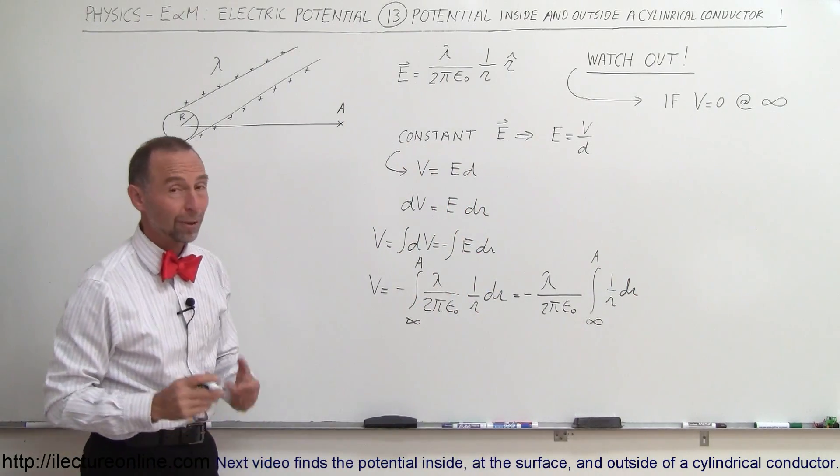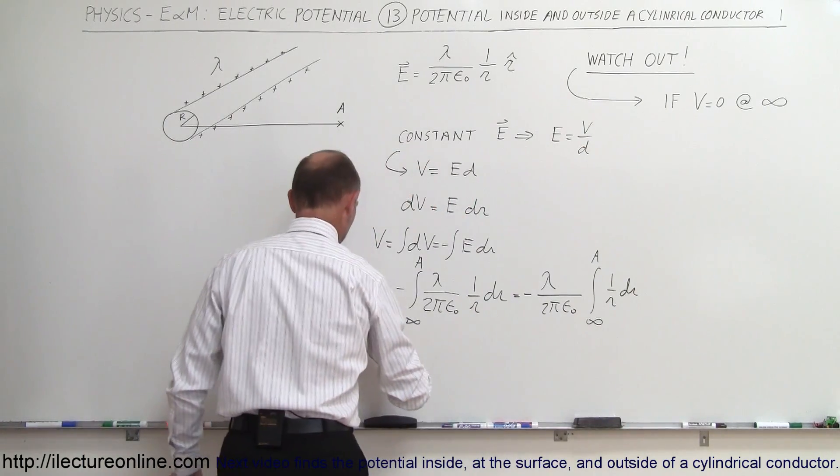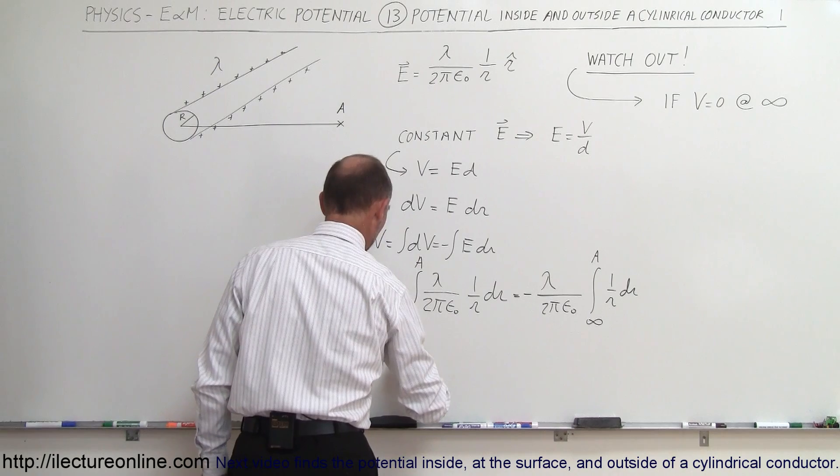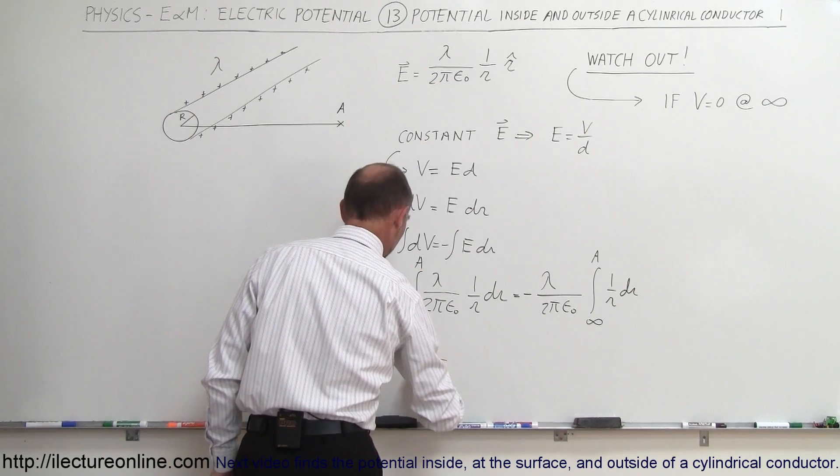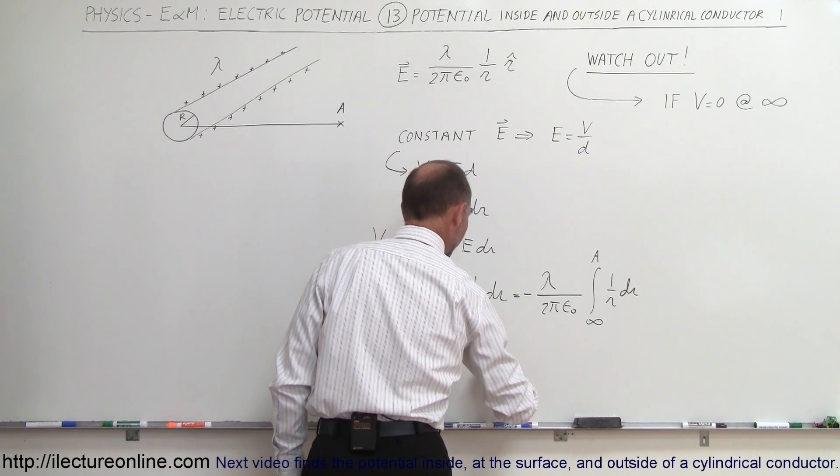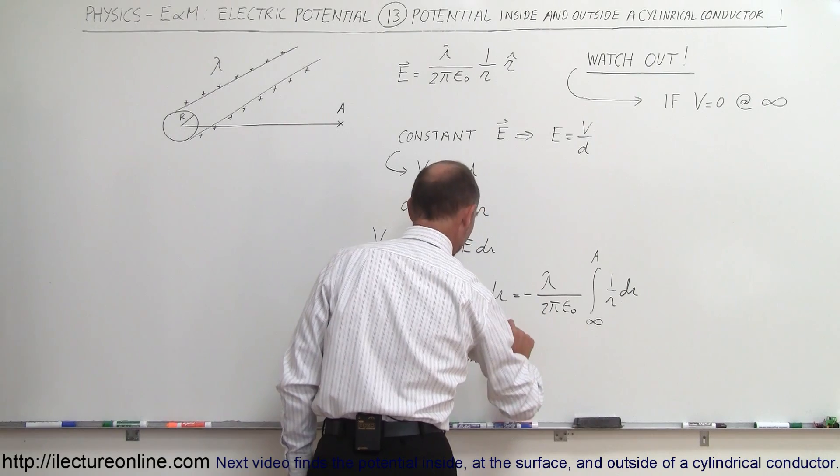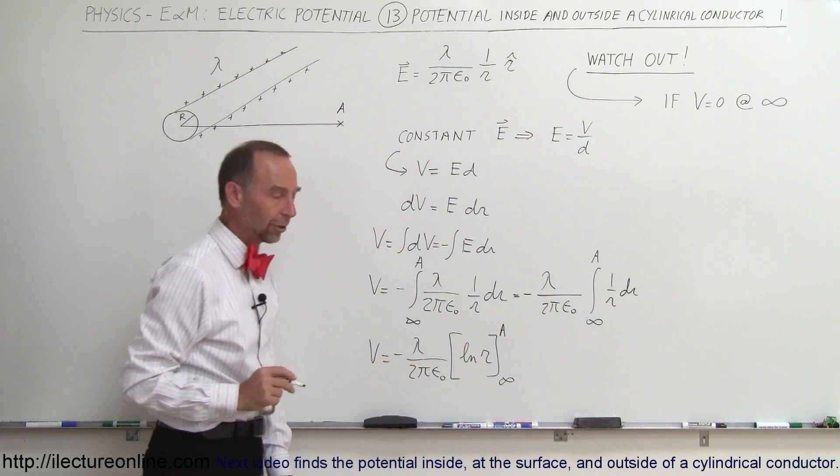What is the integral of 1 over r dr? Well, we know that that's, of course, the natural log. So V is equal to minus the linear charge density divided by 2π epsilon nought times the natural log of r, evaluated from infinity to a point close to the conductor A.